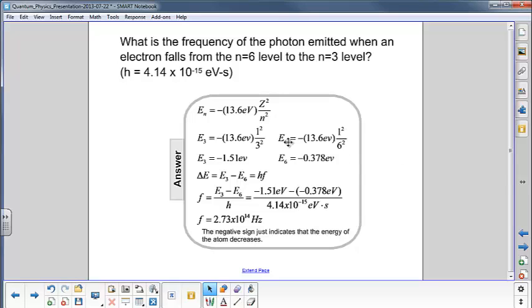And for the n equals 6 level, it's negative 0.378 eV. We find the change in energy because the frequency of the photon emitted depends on the difference of the energy levels that it transits.